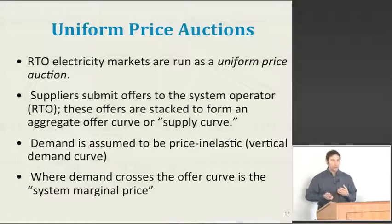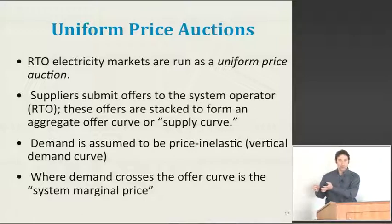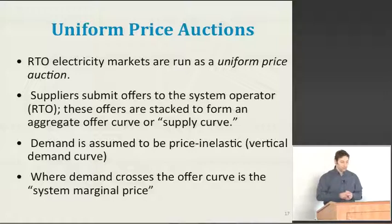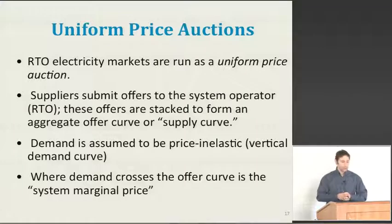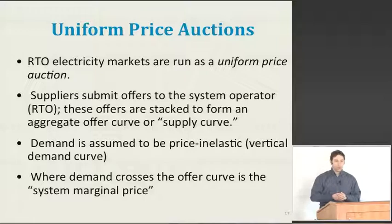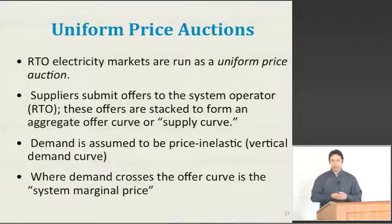The way that a uniform price auction works is that suppliers submit supply offers to the RTO, and then these offers are aggregated to form a system supply curve. Originally, demand was assumed to be perfectly inelastic, which is the same thing as saying a vertical demand curve.